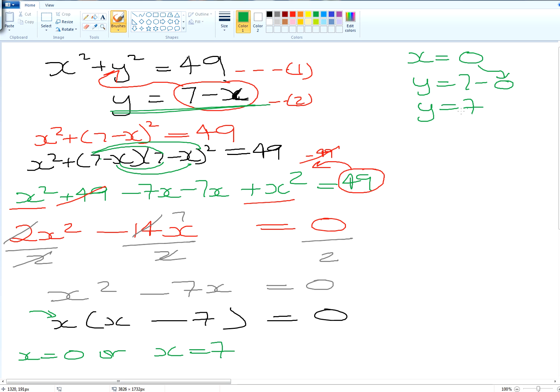Now the second x value is 7 so x is equal to 7 y is equal to 7 minus x which is 7 minus the x value so y is equal to 0.